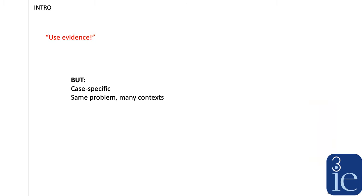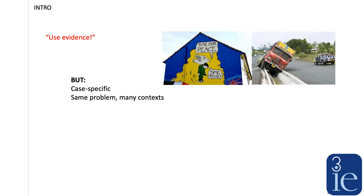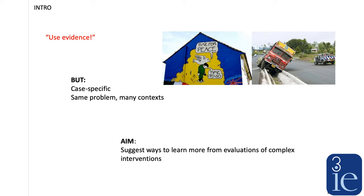A lot of problems that are prevalent in the world are very case-specific — these could be issues relating to peace or one-off historical events that we'd like to use evidence for but probably haven't seen exactly the same thing happen in the past. In other cases, we see the same problem time and again in many different contexts, such as traffic accidents, but we know the contexts are very variable from one place to the next. The aim of this review was to suggest ways to learn more from evaluations of complex interventions to better inform policy.